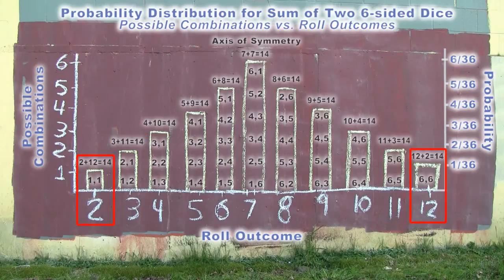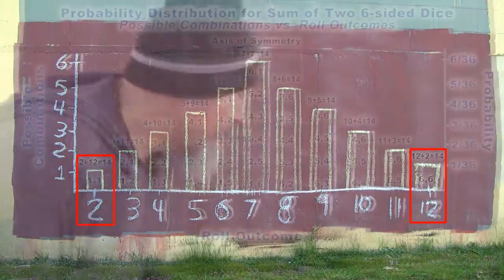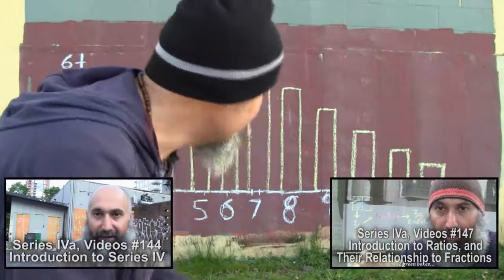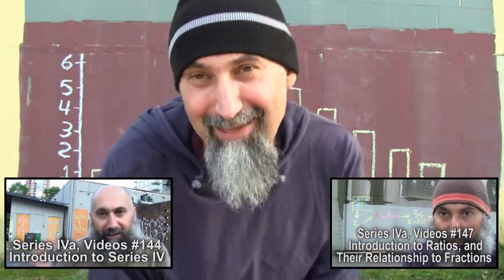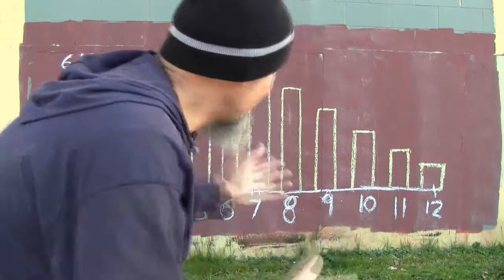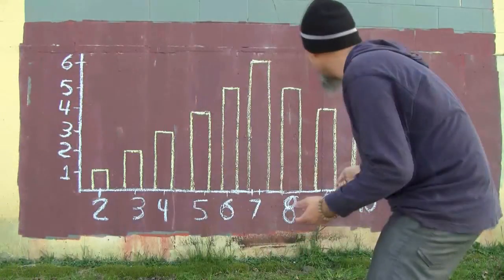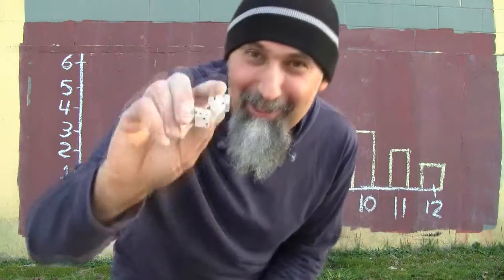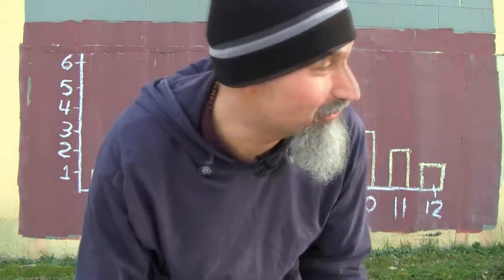We basically did a quick primer on what the probability distribution is for two six-sided dice. The reason is we're in the units and ratio section and this comes into play. We're going to refer back to this video in future videos and build on this when we get into a series on craps, which will lead us directly into probability and statistics once we finish series four. If you've got any questions, post a comment or send me a message.